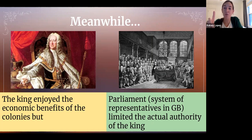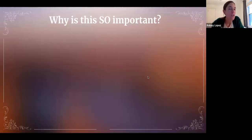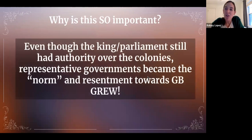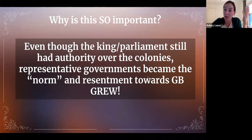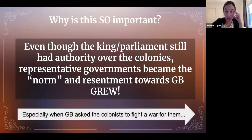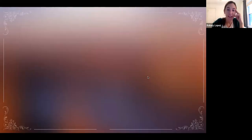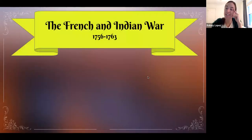Take a guess which group of people did not have representatives in Parliament. That's why all of this is so important — even though the king and Parliament still had authority over the colonies, representative little governments became the norm. There was a ton of resentment growing. The colonies felt like they could do this on their own, especially later when Great Britain asked the colonists to fight a war they didn't even want to fight — and that leads us to the French and Indian War.